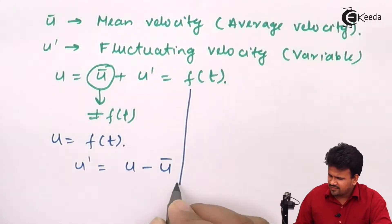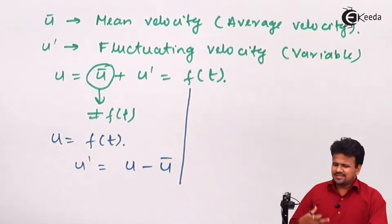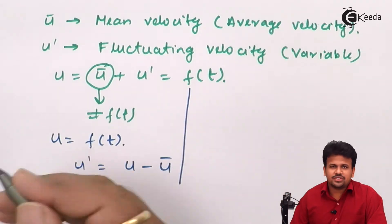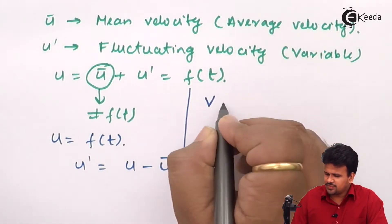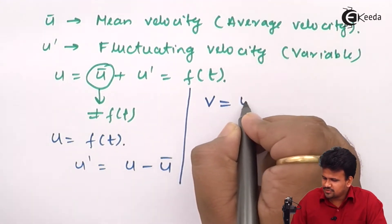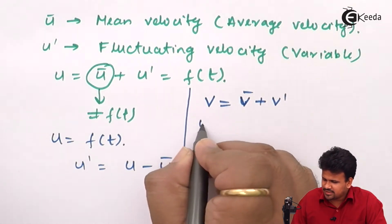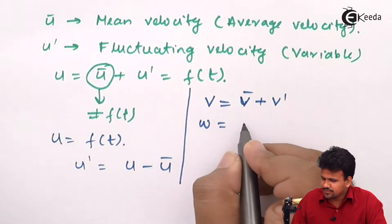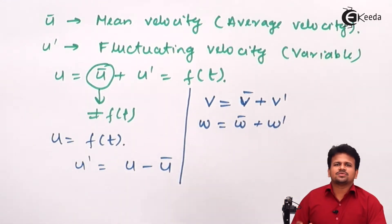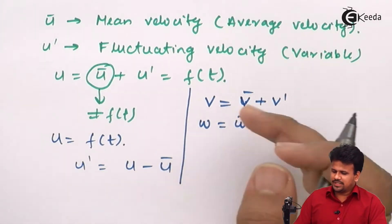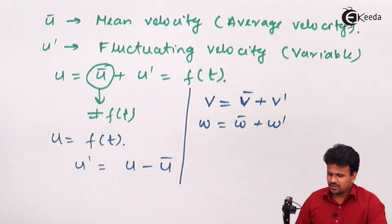We have discussed velocity along the x direction. This can also be represented in the y direction: instantaneous velocity v = v-bar + v-dash. And in the z direction: w = w-bar + w-dash. So we have accounted for fluctuating velocity in all three directions.